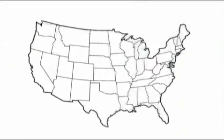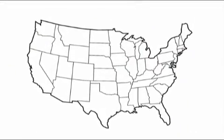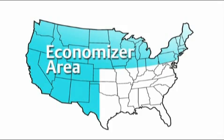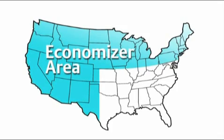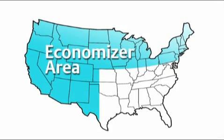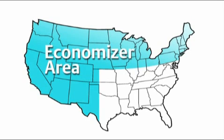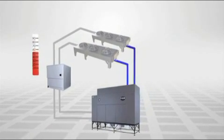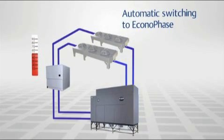ASHRAE 90.1 carries with it a prescriptive requirement for cooling economization in many geographic locations. Econiphase Economizer paired with the Liebert DSE offers a fluid-side refrigerant-based economization option that exceeds this requirement. Using the Economizer, Liebert DSE can maximize efficiency by taking advantage of cool outside air temperatures.